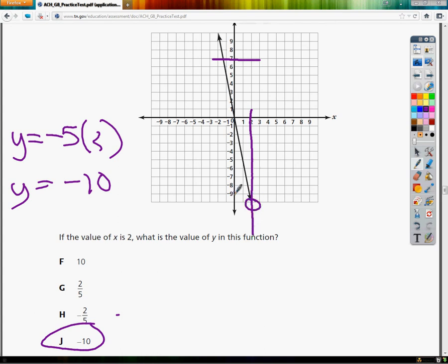It crosses right here, just below negative 9, which would make it negative 10. So my answer to number 56 is j.